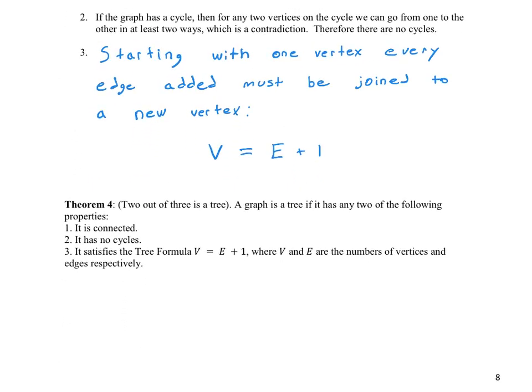Okay, so something else that's kind of interesting about these three properties that we just discussed. If you're trying to do a problem and you've discovered that you have a graph, but you don't necessarily know that that graph is a tree, you can also use these properties to help you out there. So if you have something that's a graph and you have two of these three properties, you can conclude that that graph is indeed a tree. So I call this the 2 out of 3 is a tree theorem.